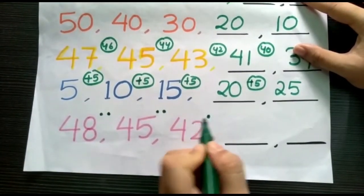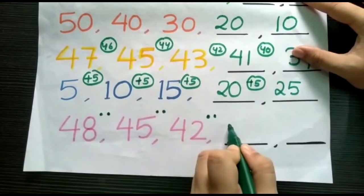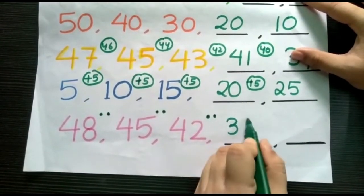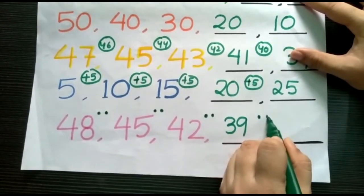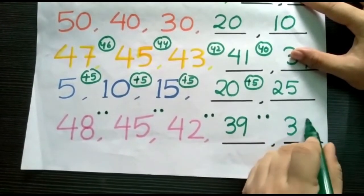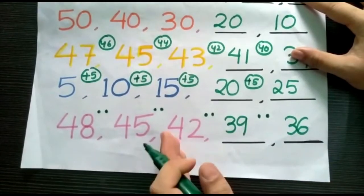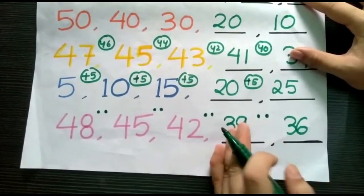42, 41, 40, 39, 38, 37, 36. So, children, that's how the pattern follows with two gaps each. Alright.